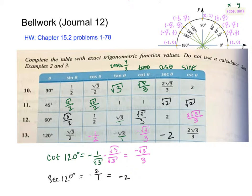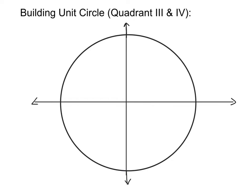Let's go build the other quadrants three and four today. I've drawn a circle — remember the unit circle has a radius of one. We start by reviewing what we first learned in chapter 14: the beginning on the x-axis starts at zero degrees, then 90 degrees, 180, 270, and back to 360 because that makes an entire revolution.